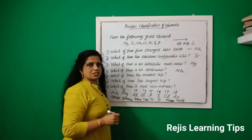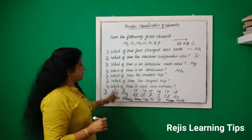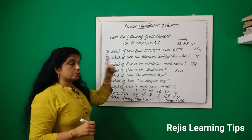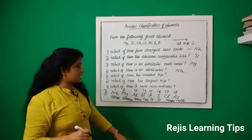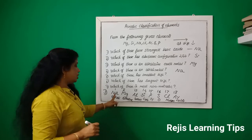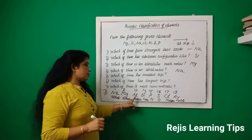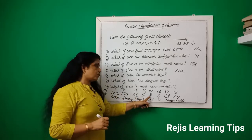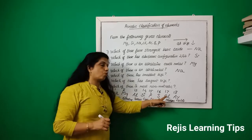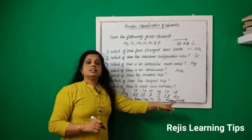The order of third period elements is: sodium, magnesium, aluminum, silicon, phosphorus, sulfur, chlorine, argon. Going from left to right, size decreases across this period.